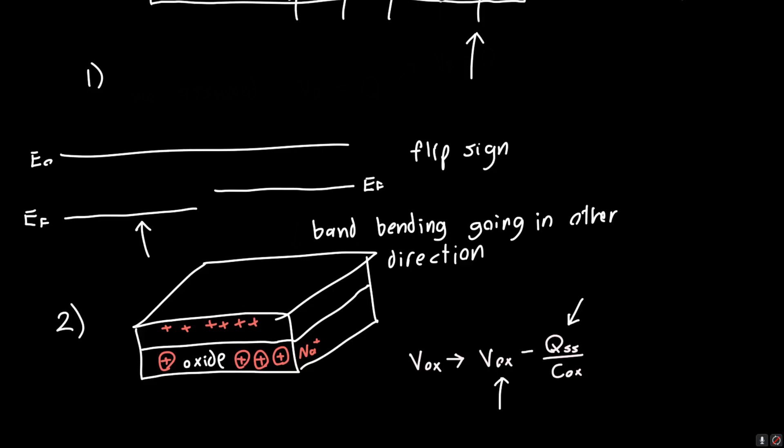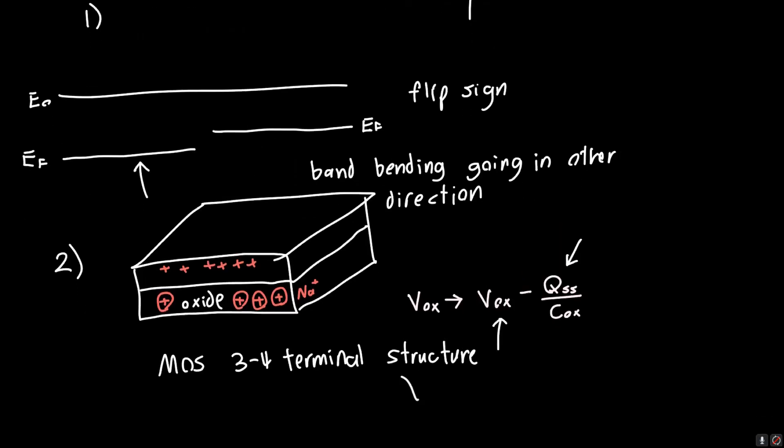So in the next video, we're going to be talking about the MOS full three terminal or four terminal structure. And this is going to lead into understanding the body effect, the body effect. And that will pretty much complete the treatment of MOS device physics. After that, it's all essentially circuit analysis. So, congratulations. You've almost made it to the very end of understanding MOSFET device physics. So I hope you enjoyed the video. If you did, please like, and comment, subscribe, and I'll see you next time. Thanks.